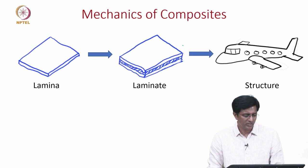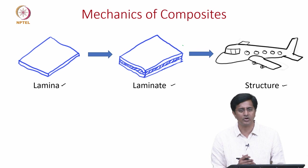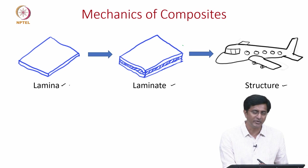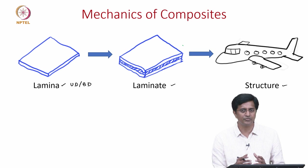When we talk about mechanics of composites, we really need to focus on the lamina, the laminate and the structure, because if we look closely at the actual building blocks of a composite — the building blocks are the fibers and the matrix materials. When we combine them we get the lamina. In this lamina there is a UD meaning unidirectional lamina or BD meaning bidirectional lamina. In both of them we have continuous fibers and the matrix material to hold them together.